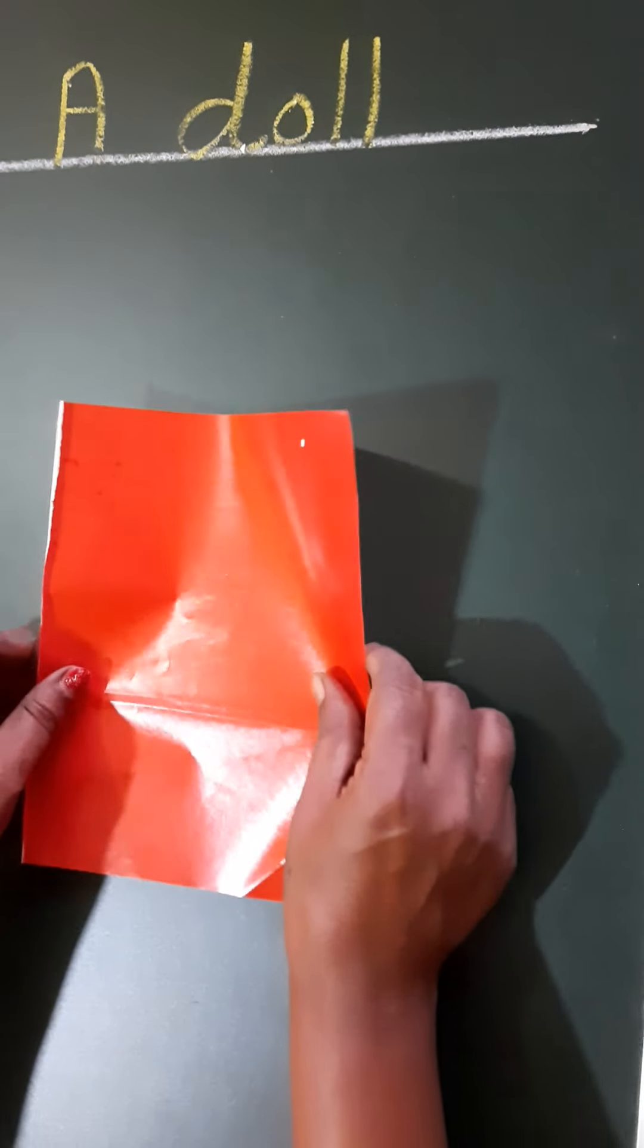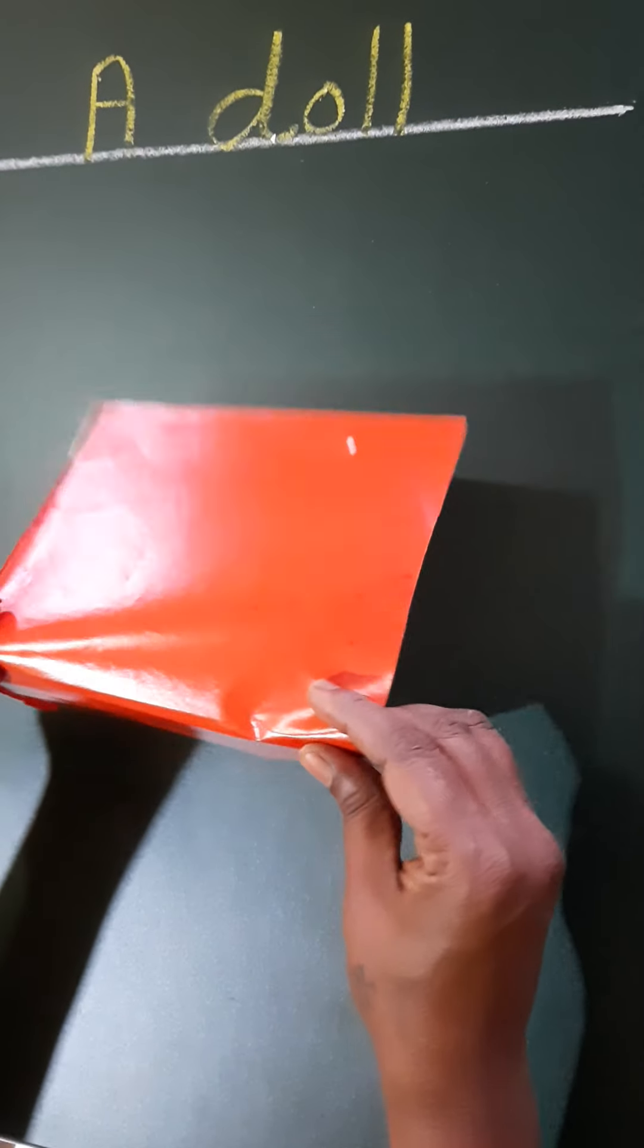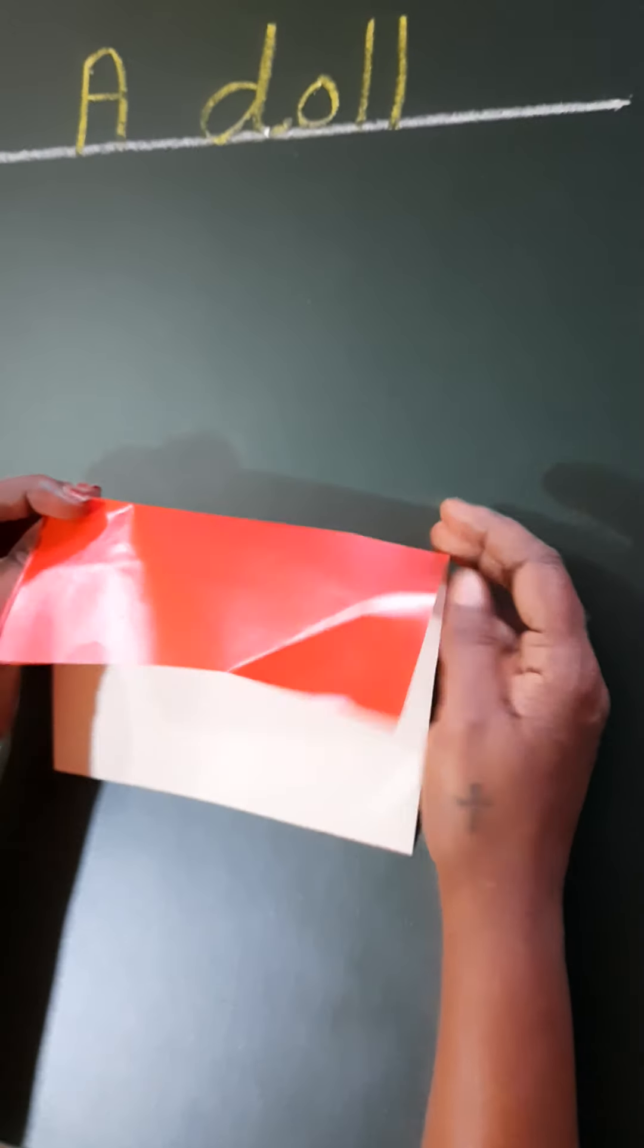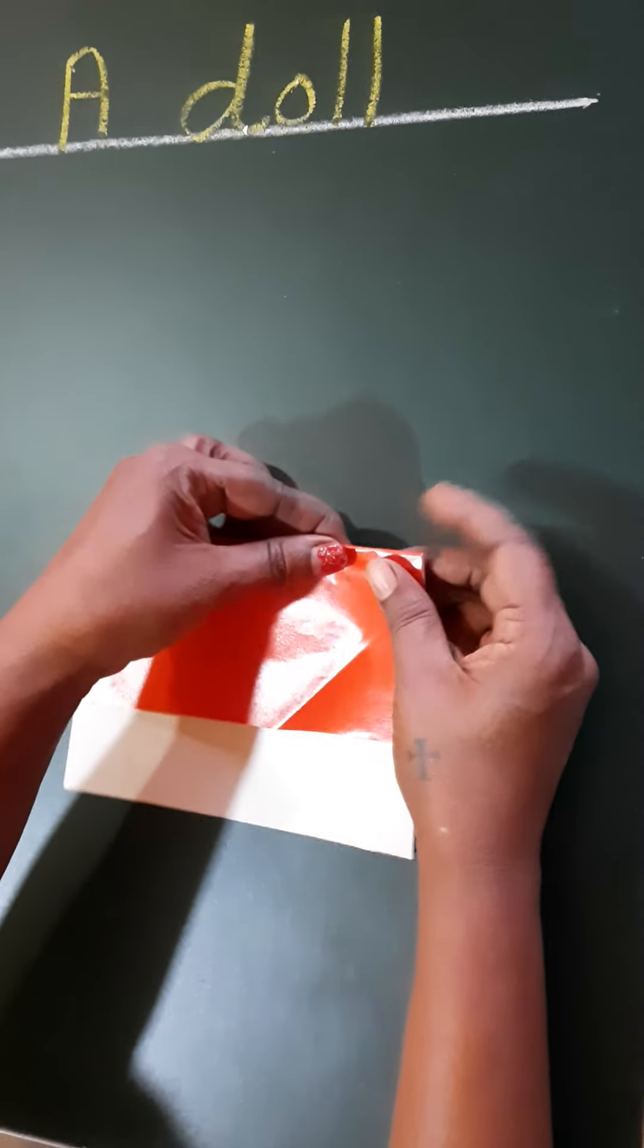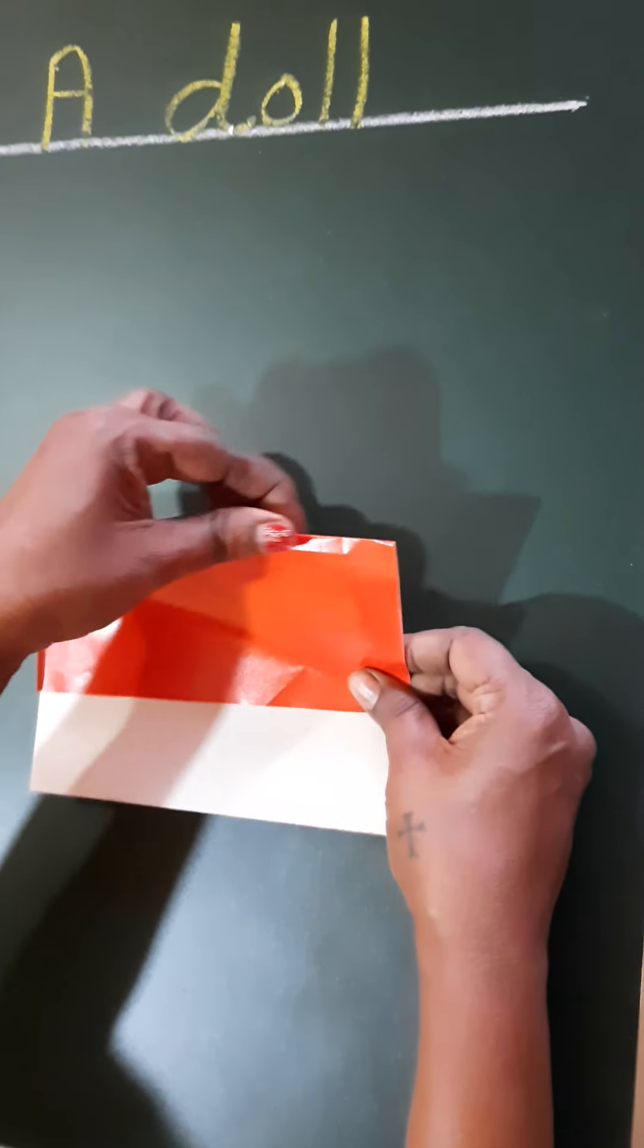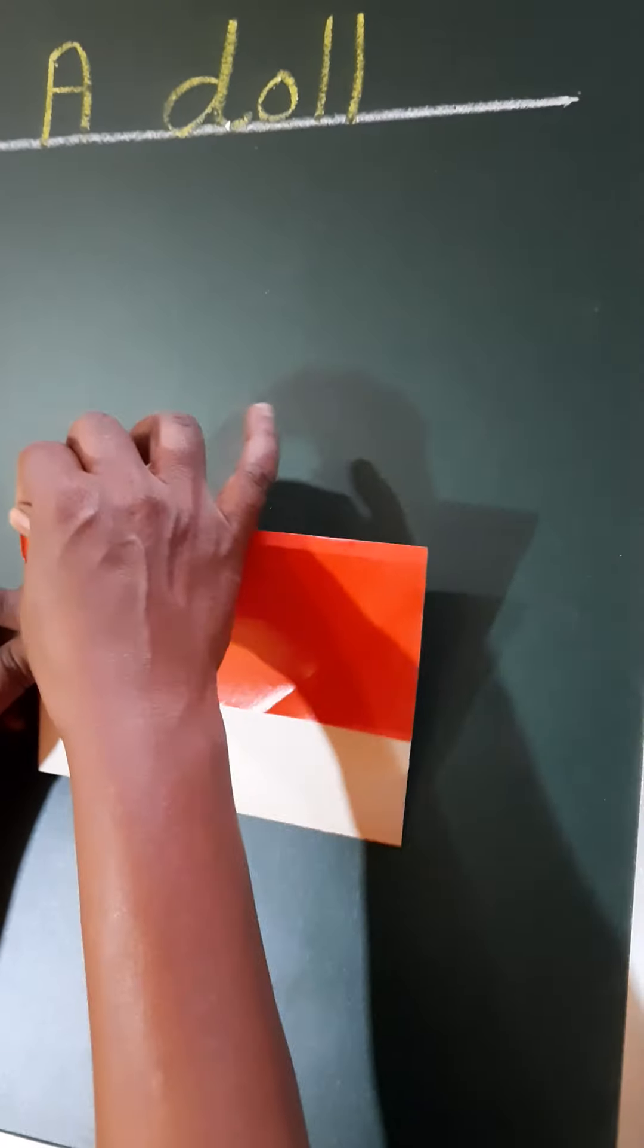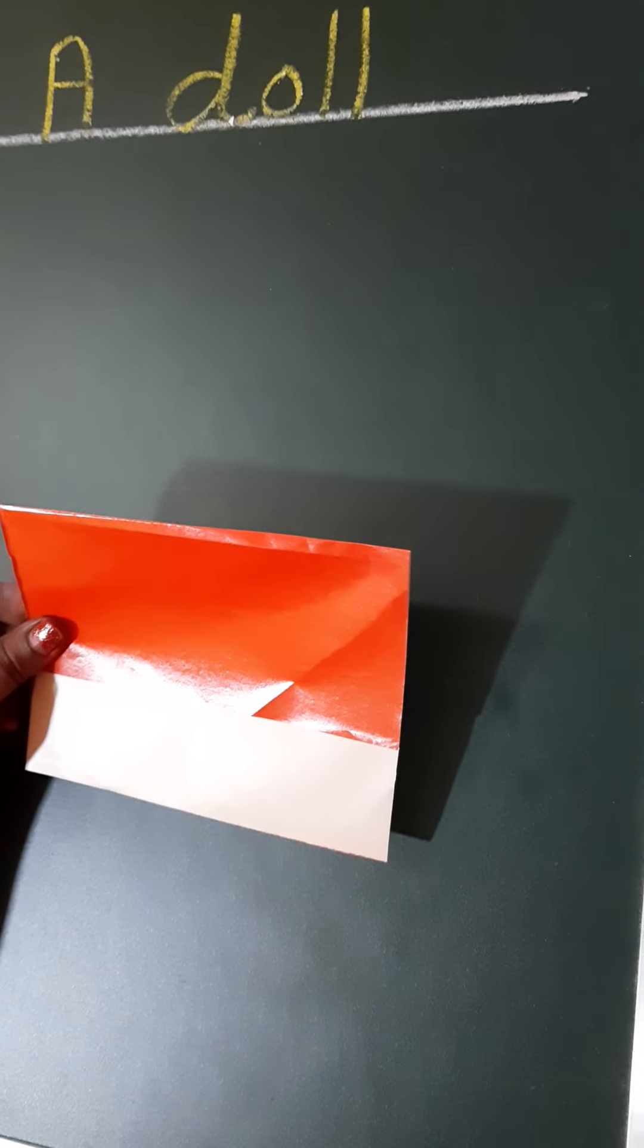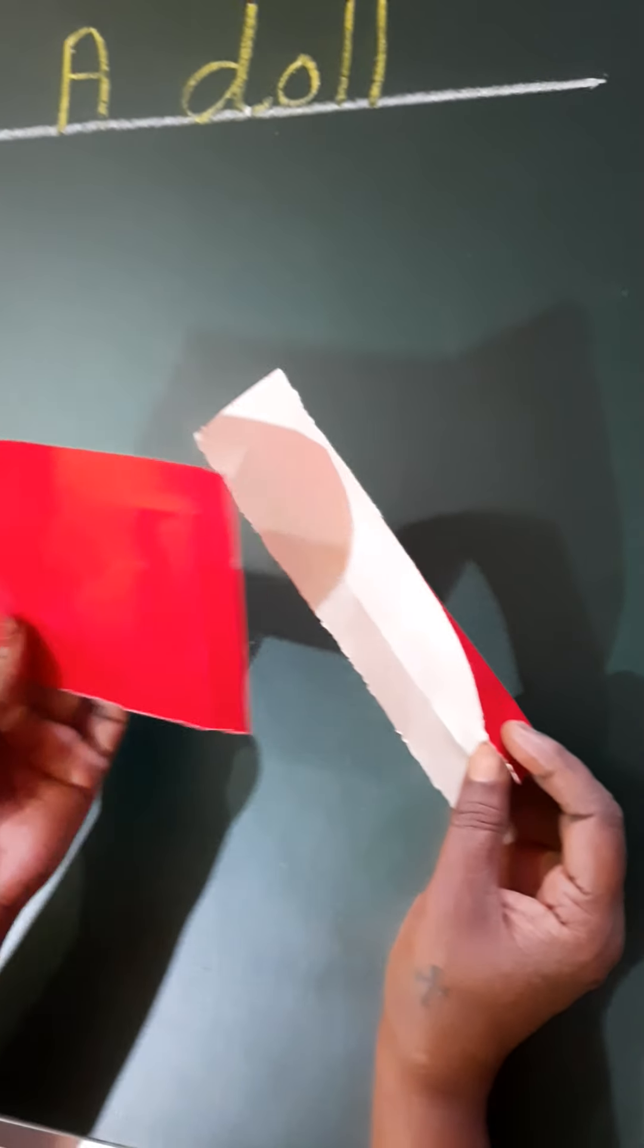For that you take a piece of paper and then you fold it like this. And then you cut the paper into two pieces like this. So you have one piece smaller than the other piece.